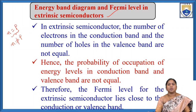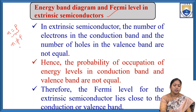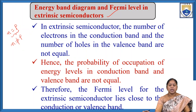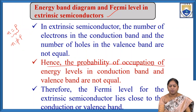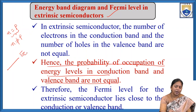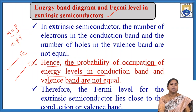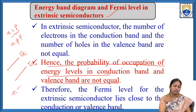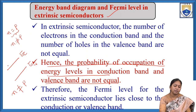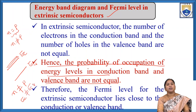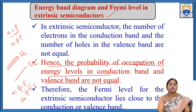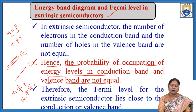In extrinsic semiconductors, the number of electrons in the conduction band and the number of holes in the valence band are not equal. Hence, the probability of occupation of energy levels in conduction band and valence band are not equal. That means the probability of occupation of energy level in EC is not equal to the occupation of energy level in EV. Therefore, the Fermi level for the extrinsic semiconductor lies close to either the conduction band or valence band.